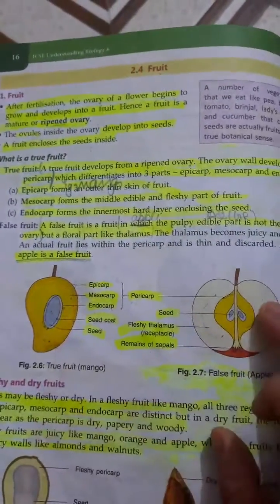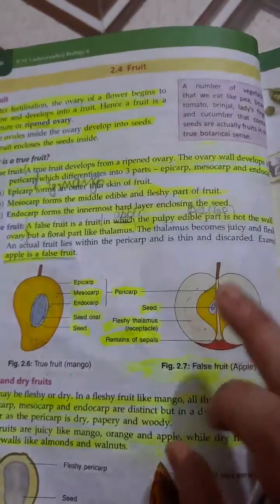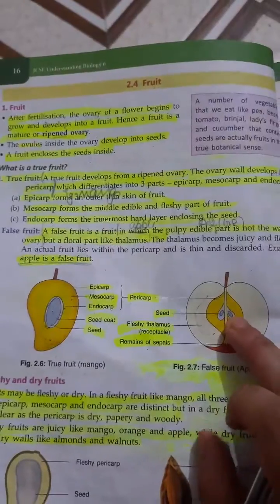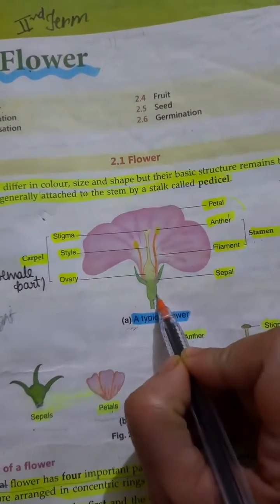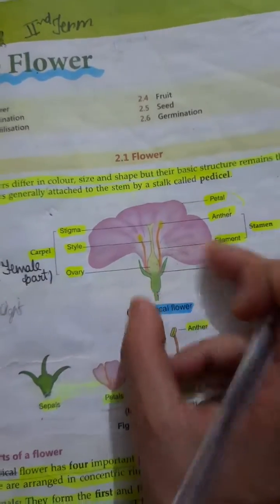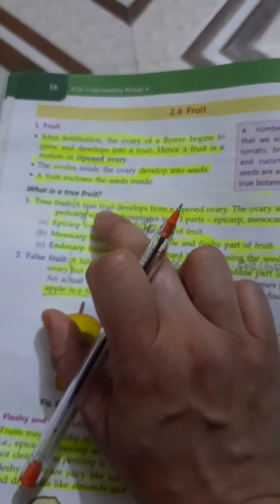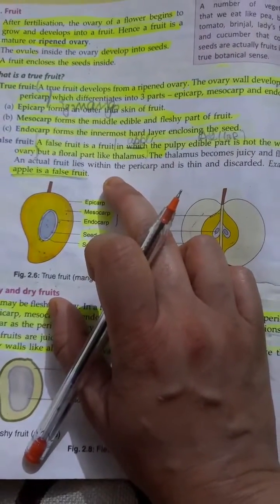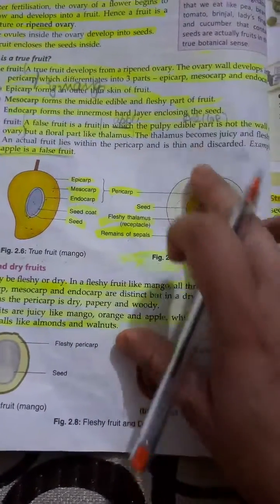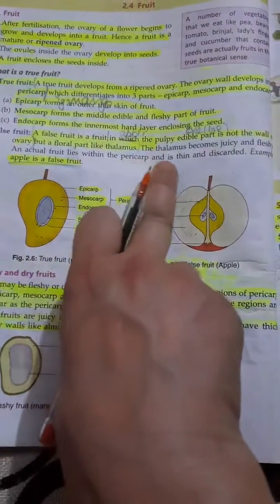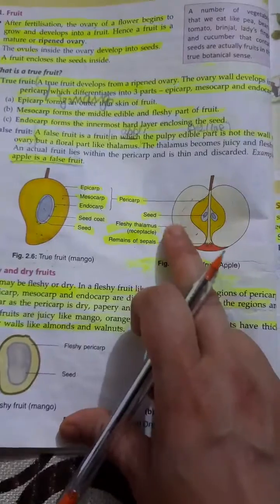A false fruit, like apple, has a pulpy edible part that does not develop from the ovary. Instead, it develops from the thalamus — the part of the flower near the sepal. The thalamus becomes juicy and fleshy, and the actual fruit lies within the pericarp. So a true fruit develops from the ovary, while a false fruit develops from the thalamus or other parts.